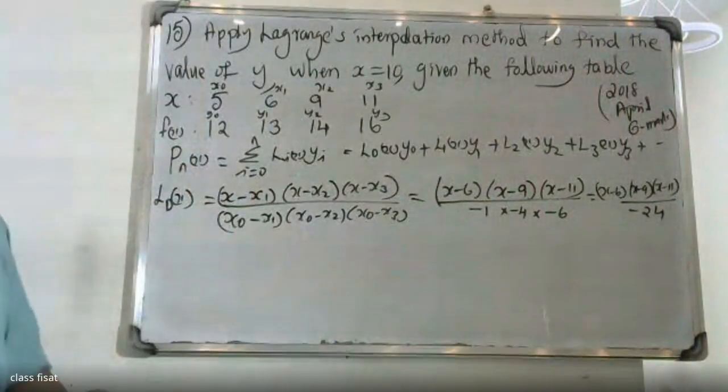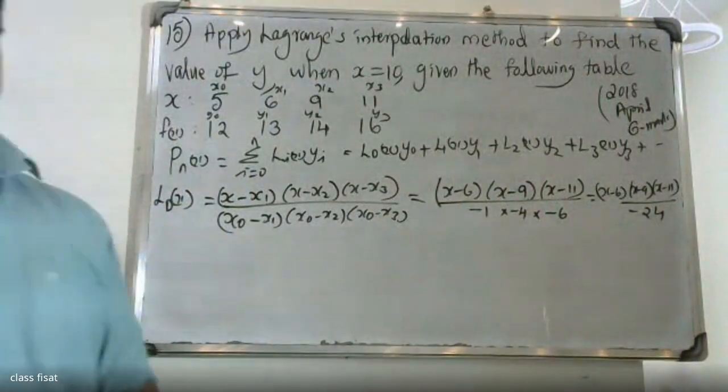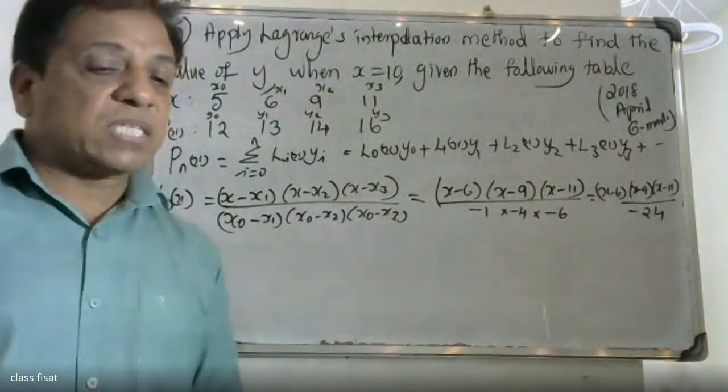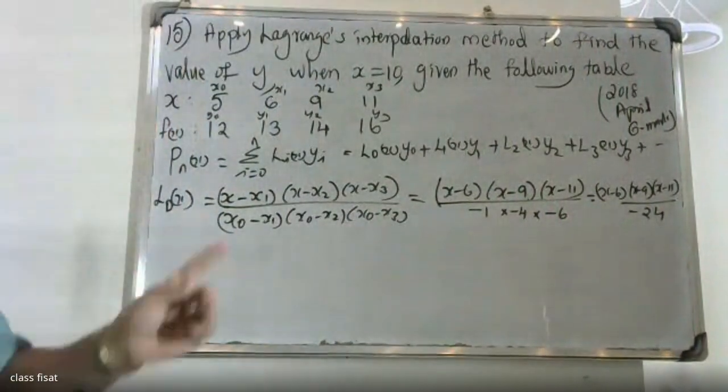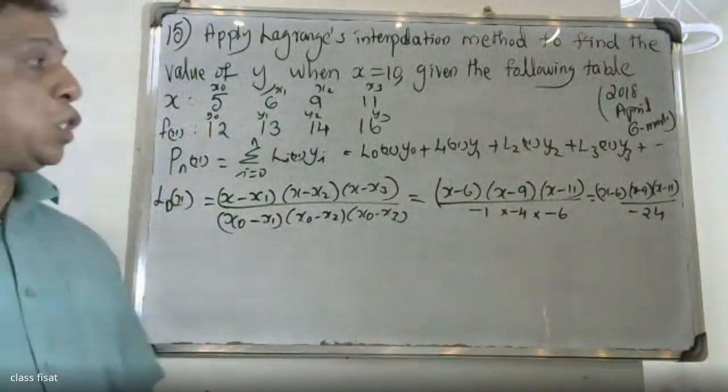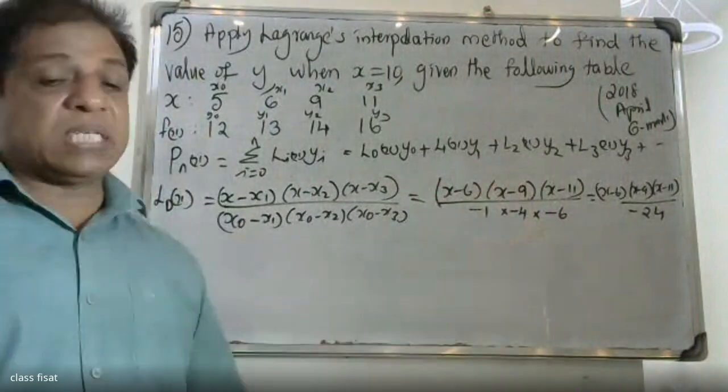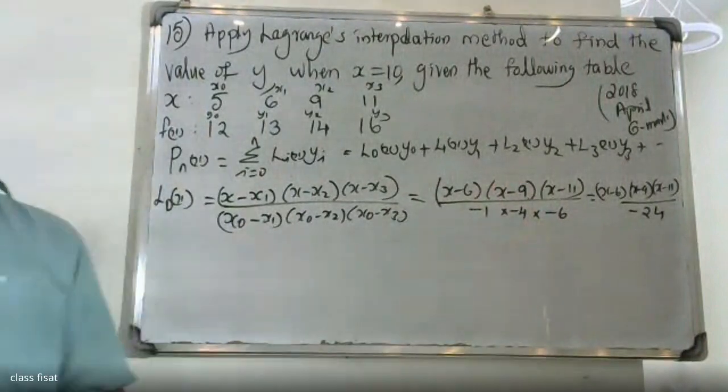So L0(x) equals (x minus 6)(x minus 9)(x minus 11) divided by minus 24.